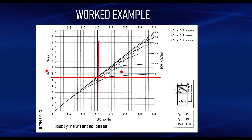To summarize the reading procedure: determine m over bd², select the right chart, read it against the dashed line for x over d — in this case 0.3, since the neutral axis must be limited. Trace this across to determine your k-value for tension reinforcement. Then check which compression curve the intersection falls into; that gives you the k-value for your compression reinforcement.